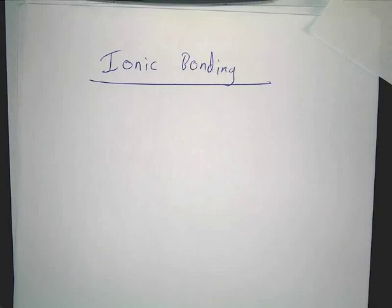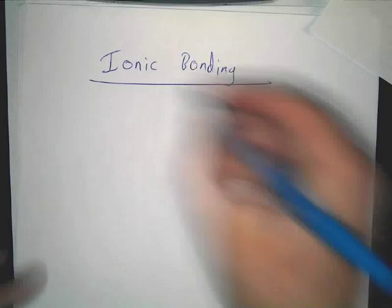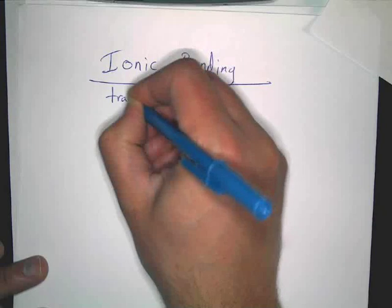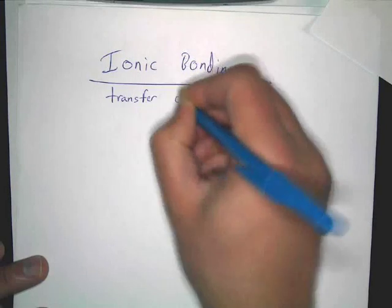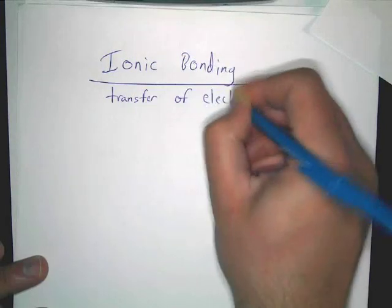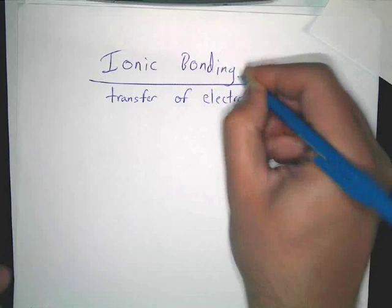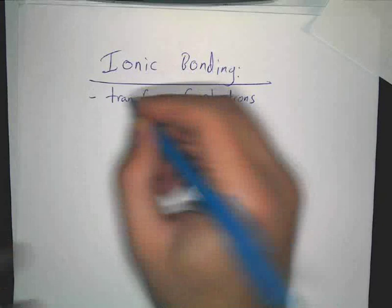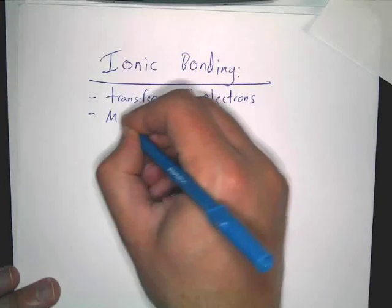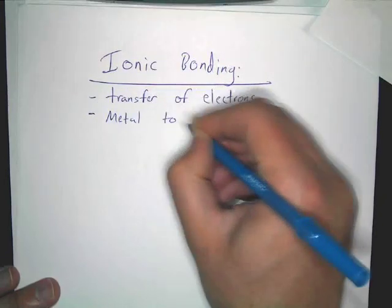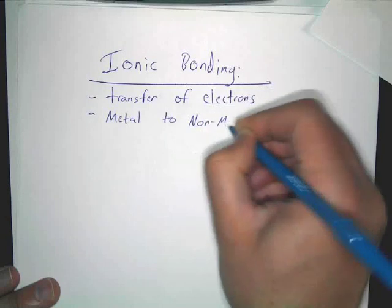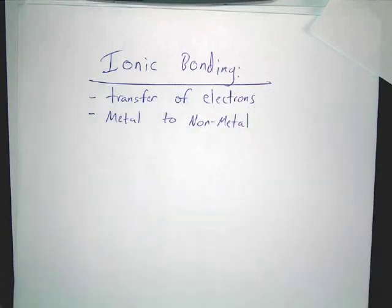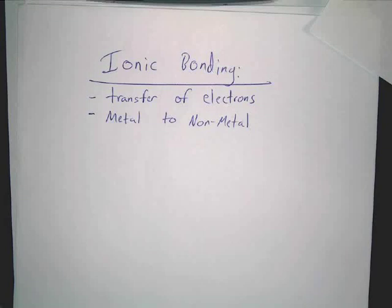The way this works — first, I want you to write that it's a transfer of electrons, and you're going to see what that means in a minute. So it's a transfer of electrons, and I'll just tell you right off the bat: it's metal to non-metal, always, every single time. Every ionic compound we ever talk about is metal to non-metal.